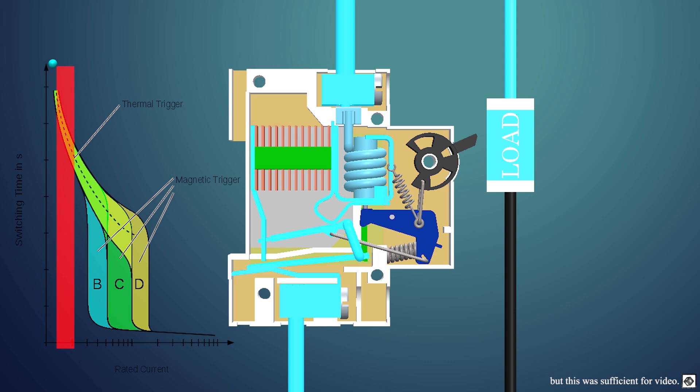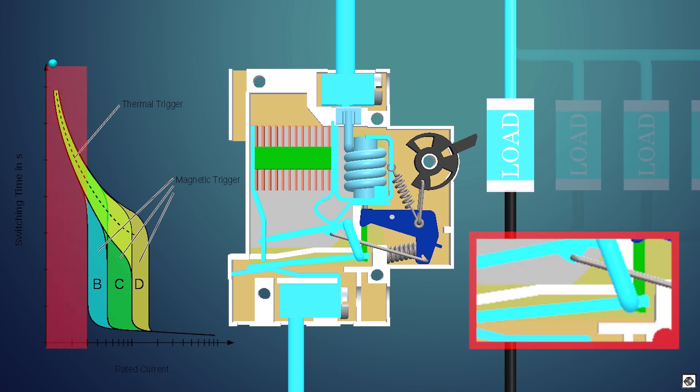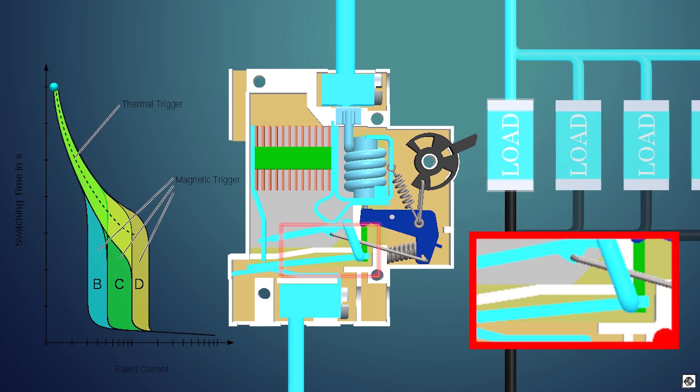This graph shows the time when the MCB trips versus the current through the MCB. As the current increases, the bimetallic strip bends.